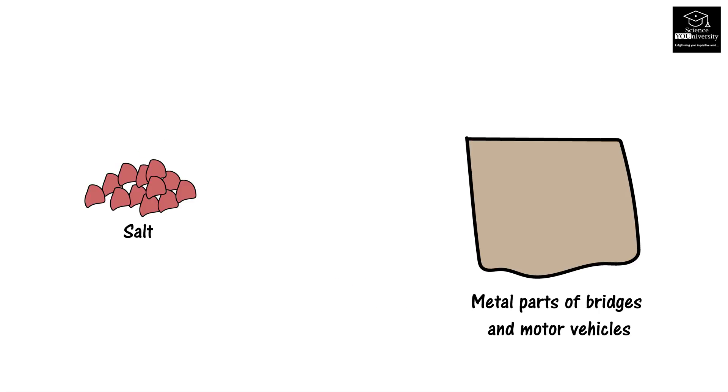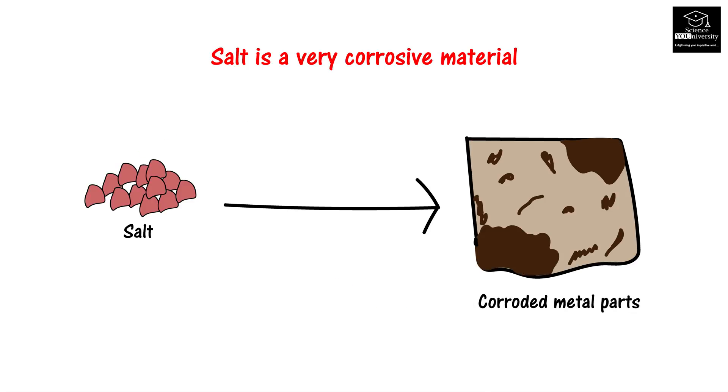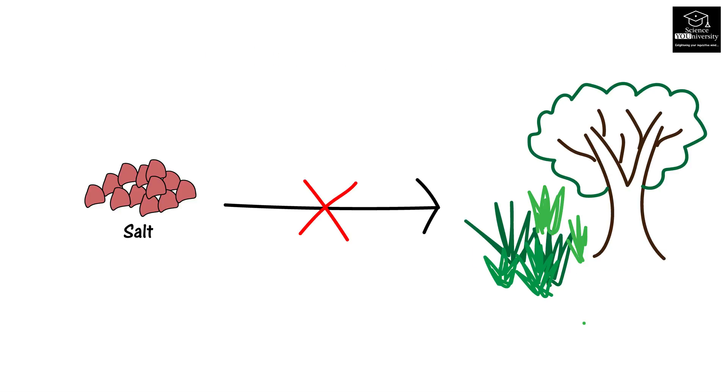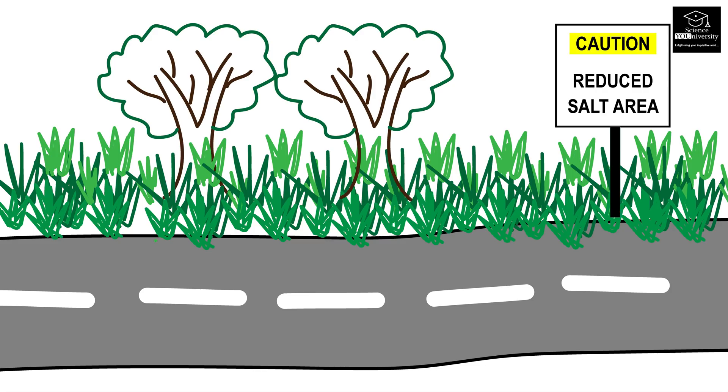The downside of salt is its negative impact on the environment. Salt is a very corrosive material, and it directly affects the vegetation. That's why in some areas you can see reduced salt area signs in highways.